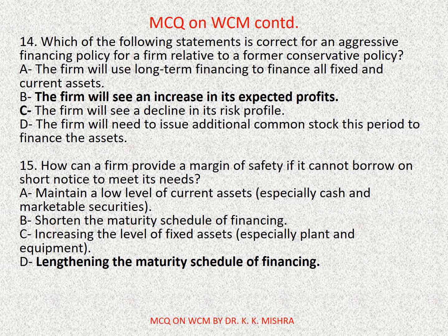Question number fourteen: which of the following statements is correct for an aggressive financing policy for a firm relative to a former conservative policy? Options are: A) the firm will use long-term financing to finance all fixed and current assets, B) the firm will see an increase in its expected profits, C) the firm will see a decline in its risk profile, D) the firm will need to issue additional common stock this period to finance the assets. Correct option is B: the firm will see an increase in its expected profits.